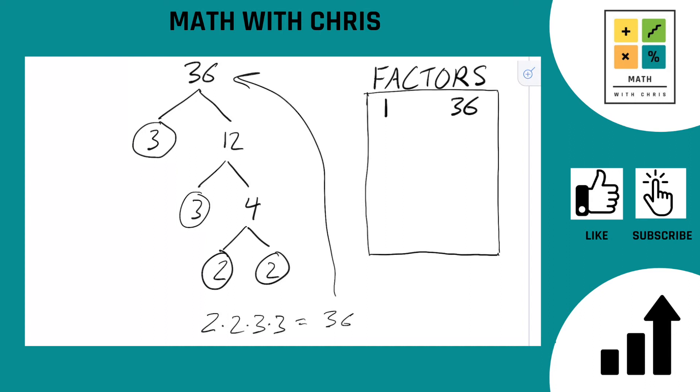So now we bank the prime factors we got. We got a 2 and we got a 3. And what else can we bank? Well, we can bank anything we hit along the way. We hit a 12 and we hit a 4, so both of those get banked. 12, 4.